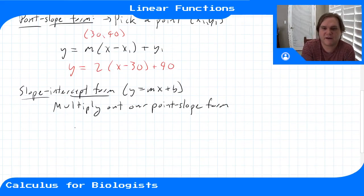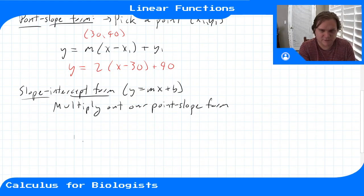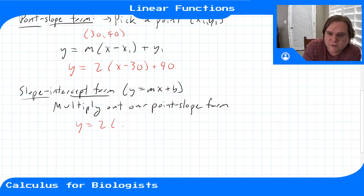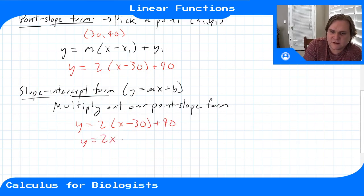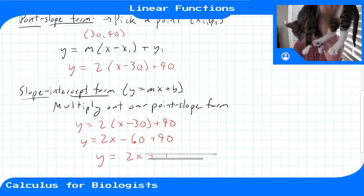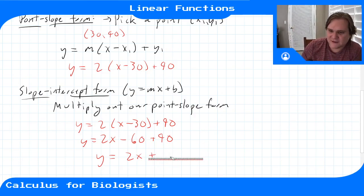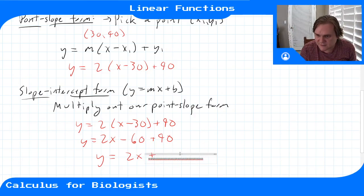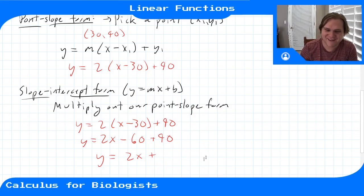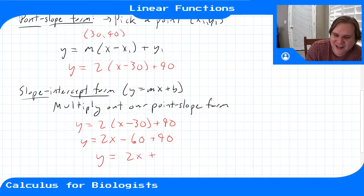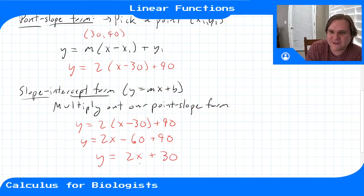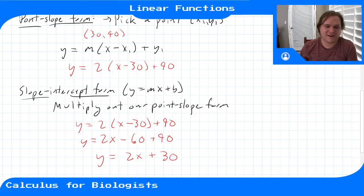So in this case, we have y equals 2 times x minus 30 plus 90. We multiply this out, we get y equals 2x minus 60 plus 90. And then we simplify, we get y equals 2x plus 30. So then this is our line in slope-intercept form, where this is our slope, m, and this is our intercept, b.